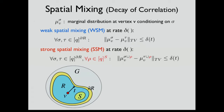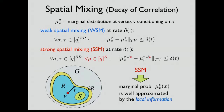Strong spatial mixing requires further that the decay of correlation still holds even when conditioning on a subset of vertices with arbitrarily fixed states. With strong spatial mixing, the marginal probability with arbitrary conditioning is well approximated by local information. To establish strong spatial mixing and approximate this value with local computation, we use a recursion.